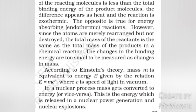According to Einstein's theory, mass M is equivalent to the energy E given by the relation E = MC², where C is the speed of light in vacuum. In nuclear processes, mass gets converted into energy or vice versa. This is the energy which is released in nuclear power generation and nuclear explosions.